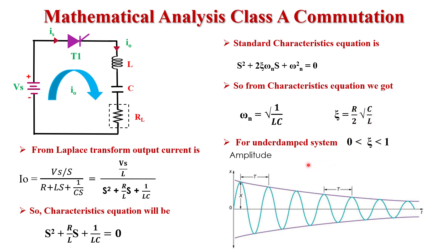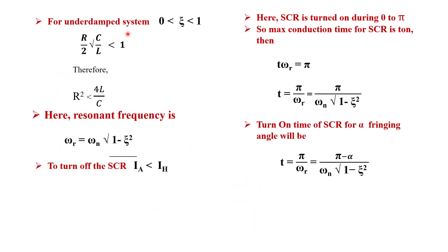For the system to be underdamped, ζ must lie between 0 and 1. If ζ is between 0 and 1, the circuit behaves like an underdamped system. Since ζ = (R/2)√(C/L) must be less than 1, solving this gives R² < 4L/C. The load resistance R is known, so we choose proper values of L and C such that R² < 4L/C to ensure underdamped behavior.